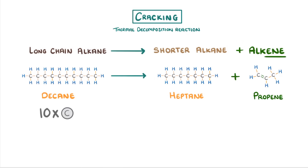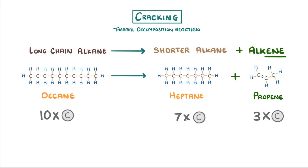So as decane is 10 carbons long, and one of the products is heptane which has 7 carbons, then our other product must have 3 carbons. And if you do the same thing for hydrogens, you'd find that there aren't enough hydrogens left for both products to be saturated and to have all single bonds. So instead, one of our products has to have a double bond, which is what makes it an alkene rather than an alkane. Instead of being a waste product, these alkenes can be used to produce polymers, and also be used as starting materials for producing loads of other chemicals.